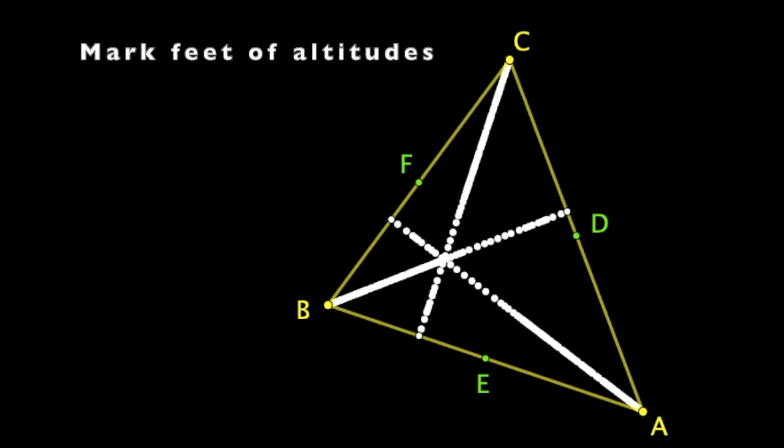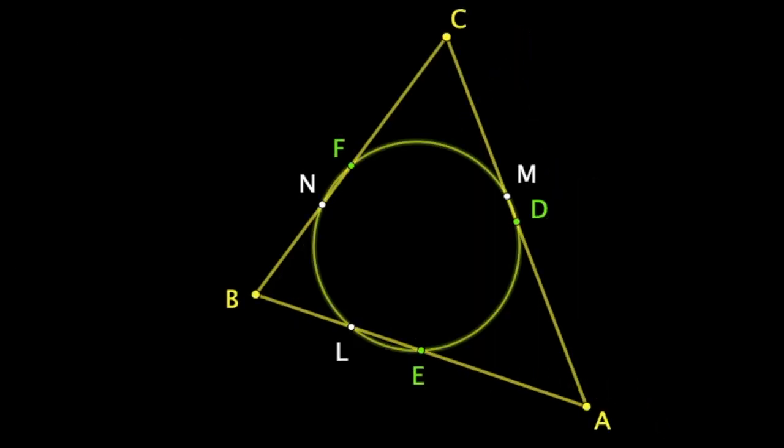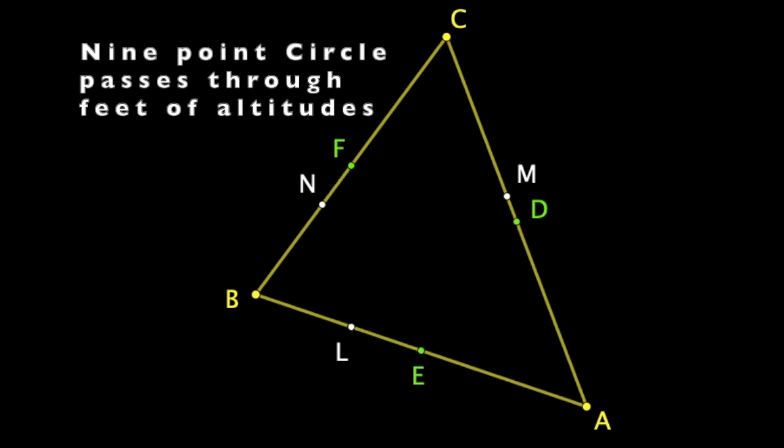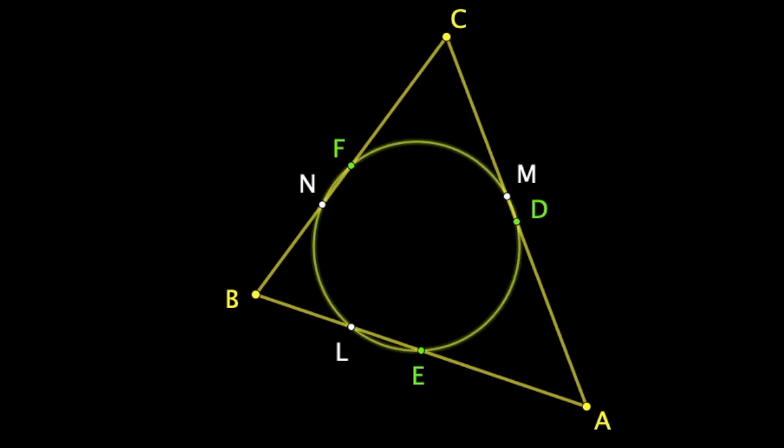Let's mark the feet of the altitudes call them L, M and N respectively. The circle actually passes through L, M and N as well.